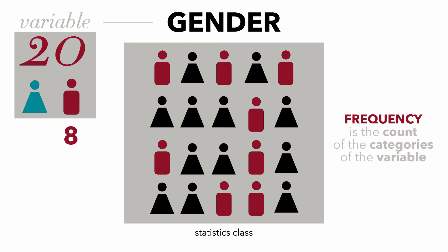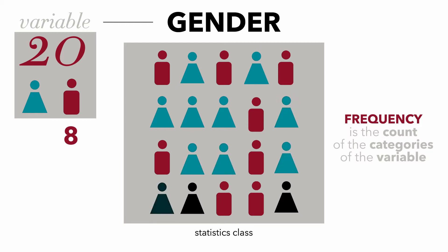How many females do we have? Go through and count them. One, two, three, four, five, six, seven, eight, nine, ten, eleven, twelve — twelve females, for a total of twenty. We've just calculated a frequency distribution for gender. It's that simple.